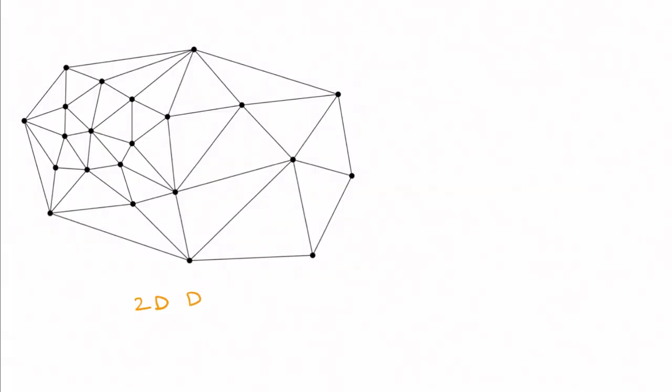In 2D, the Delaunay triangulation is a simplicial complex where each simplex, a triangle, has an empty circumcircle.